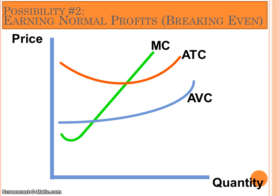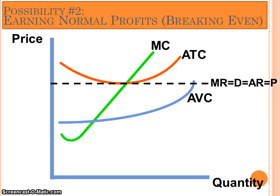The market is what sets the price that the producer has to offer their product for sale at, but we're going to work backwards to prove how this works. On your sheet in the practice problem packet, go ahead and draw in Mr. DARP for the firm, which is set by the market, at the price of $92. When you draw in your Mr. DARP, make sure that it intersects marginal cost and average total cost at the base of the average total cost curve.